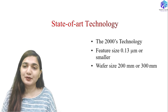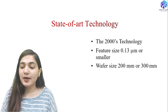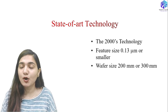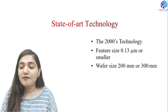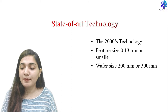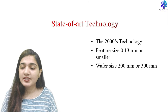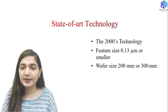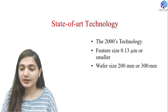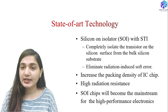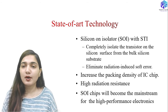The state-of-the-art technology in the 2000s has a feature size of 0.13 micrometer or even smaller, and a wafer size of 200 mm or even 300 mm. This is a very significant change — the feature sizes were further reduced. We also have silicon-on-insulator (SOI) used with shallow trench isolation (STI) for isolation formation.